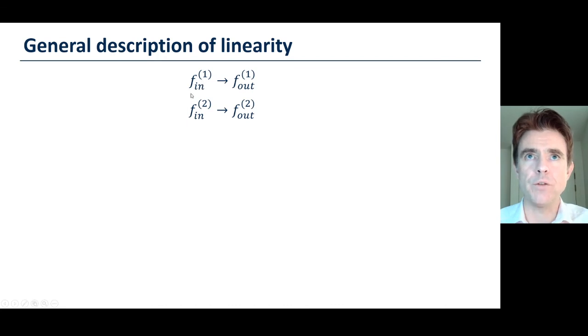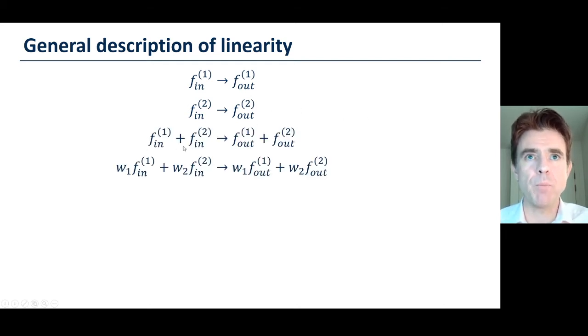Linearity, very simple concept. Some function f1 going into the input of the mapping gives some output. Some function f2 as an input gives some function f_out superscript 2. And as we've seen, if we sum them together, if we put them in simultaneously into our scanner, then the output is predictably just the sum of the two individual outputs. Also with linearity, we can arbitrarily weight each of those input images, and then the output would be those previous two output functions, but with the respective scaling factors of the inputs.